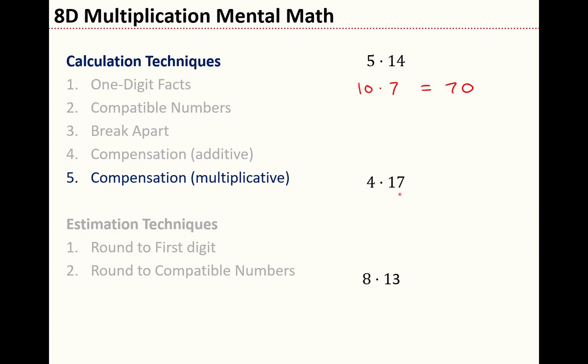How about 4 times 17? Doubling isn't too bad. So I can halve the 4, give me 2 times, this becomes 34. And now 2 times 34 is something I can figure out. 68.